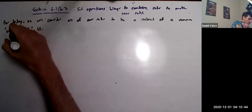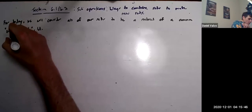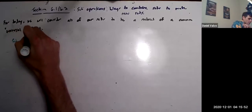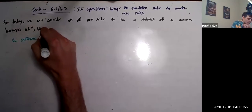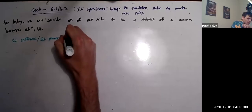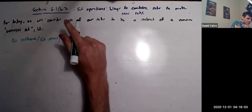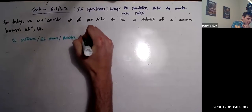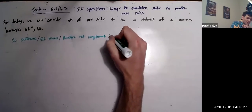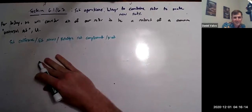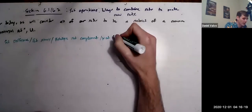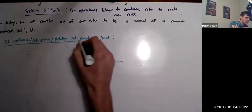So the next operation we're going to talk about has actually a few different names. It's called set difference, set minus, relative set complement, or 'not.' It's an operation by many names — it's a notorious one in that way, in many ways in fact, but really just this way.